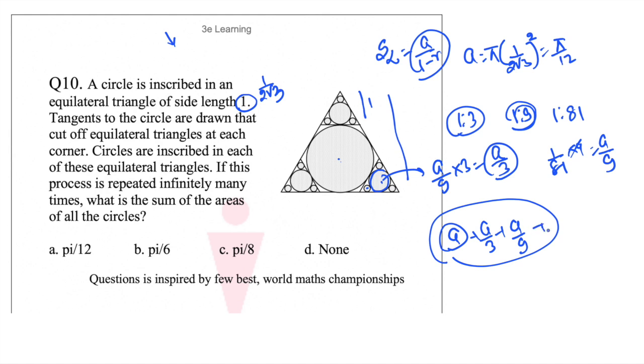By the GP S infinity, the first term is a and here the common ratio is 1 by 3, so answer should be 3 by 2 a. And what is the value of a? It is nothing but 3 by 2 into pi by 12, which is nothing but pi by 8.